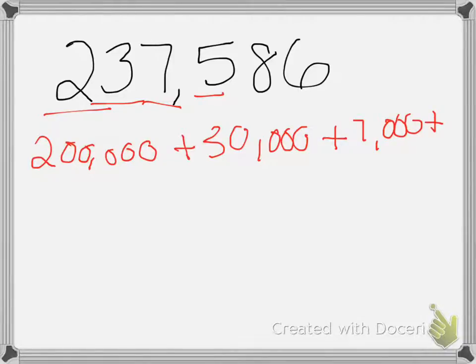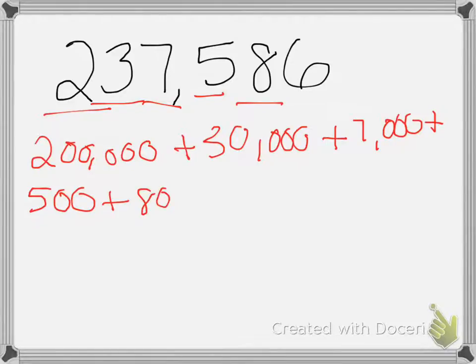My 5 is in the 100th place, so its value is 500. Plus 8 — it's in the 10th place, so its value is 80. Plus 6.